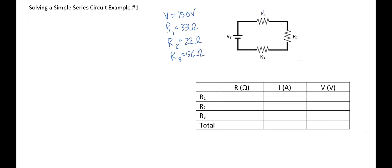So if I look in my series circuit over here, that means that I have 150 volts coming out of my battery here, and then I have 33 ohms for R1, 22 ohms for R2, and 56 ohms for R3.